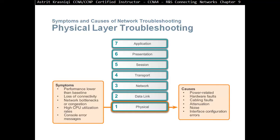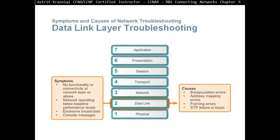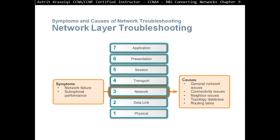At layer two, some symptoms include no functionality or connectivity at the network layer or above, network operating below the baseline performance level, excessive broadcast messages, or console messages. Causes could be encapsulation errors, addressing mapping errors, framing errors, or spanning tree protocol failure or spanning tree protocol loops.